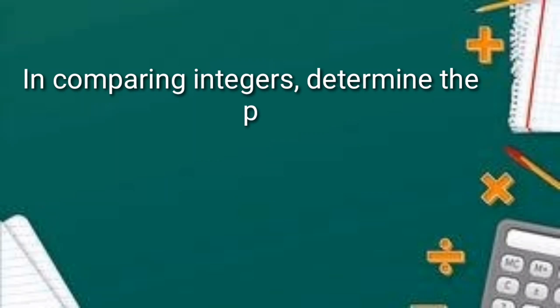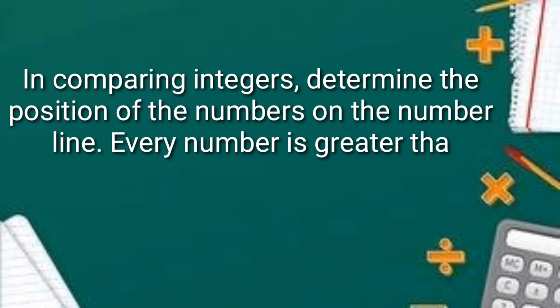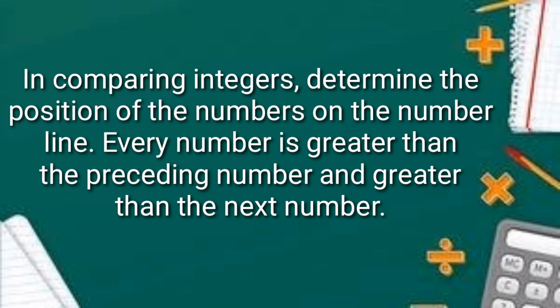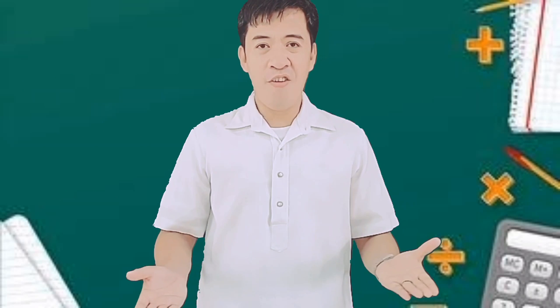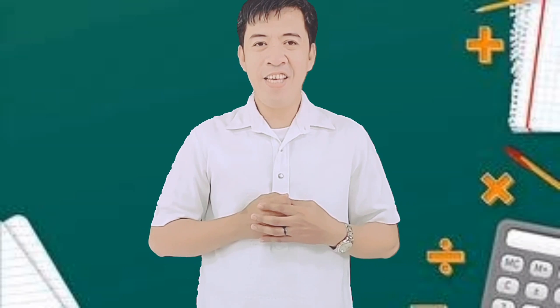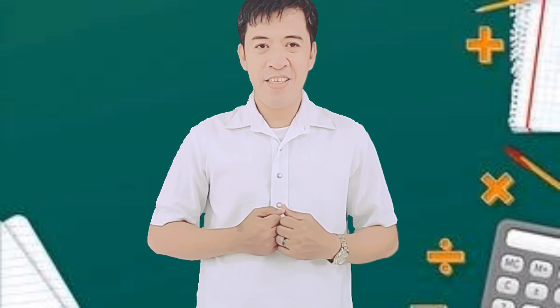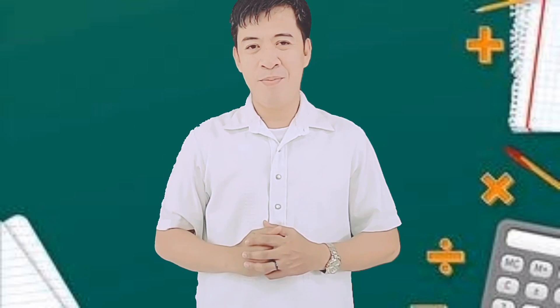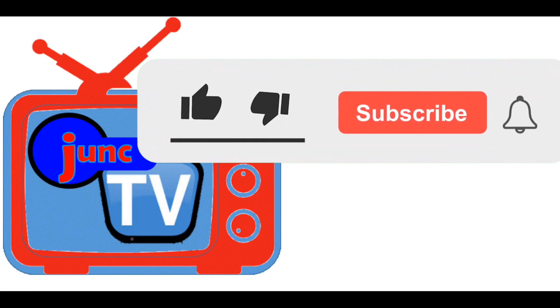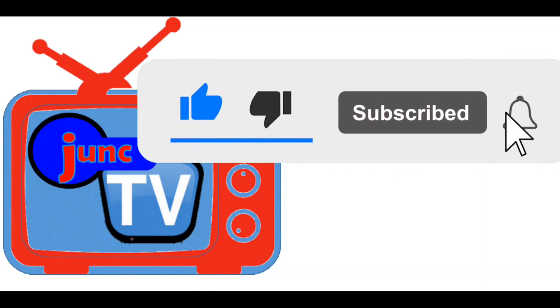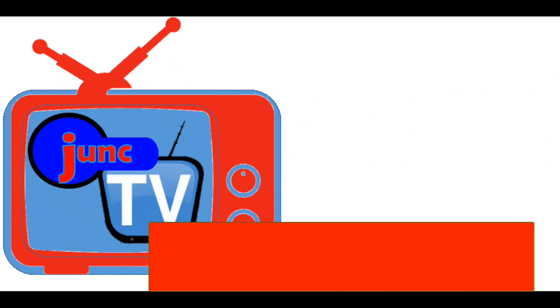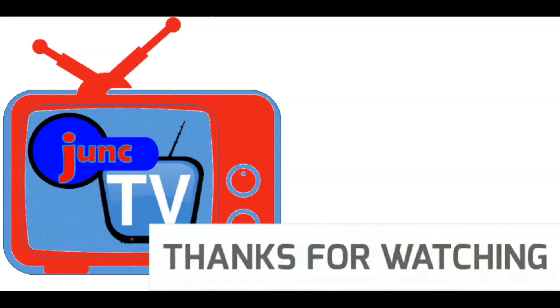That's it. Always remember, kids, that in comparing integers, determine the position of the numbers on the number line. Every number is greater than the preceding number and less than the next number. That's all for today. I hope that I made your math more easy and fun. See you on my next video. Bye!